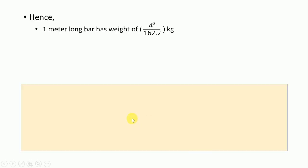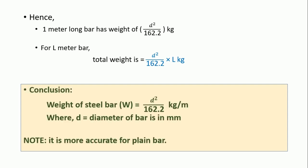So for L meter bar, total weight is equal to d squared by 162.2 times L kg. Multiply by the length to get the total weight proportional to the length. This is the conclusion.